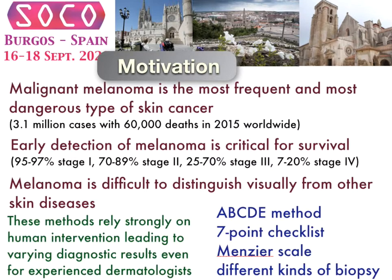One of the problems is that melanoma is very difficult to distinguish visually from other skin diseases, such as carcinoma. The methods we have to identify melanoma — such as the ABCD method, the seven-point checklist, the Menzies scale, or different kinds of biopsy — rely strongly on human intervention. An additional problem is that diagnostic results change from dermatologist to dermatologist, even among experienced practitioners.